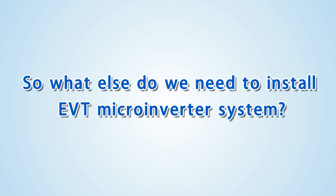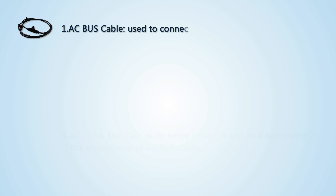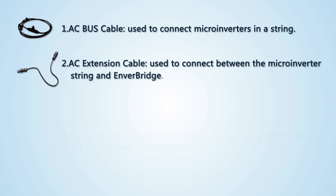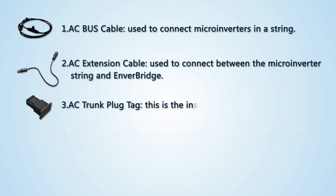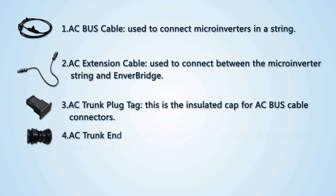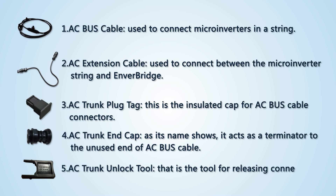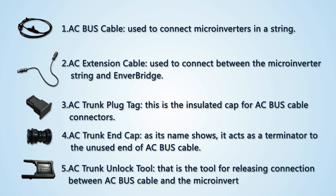To install the EVT microinverter system, you also need the following accessories: AC bus cable, used to connect microinverters in a string; AC extension cable, used to connect between the microinverter string and Enver Bridge; AC trunk plug cap, which is the insulated cap for AC bus cable connectors; AC trunk end cap, which acts as a terminator to the unused end of the AC bus cable; and the AC trunk unlock tool, used for releasing the connection between the AC bus cable and the microinverter.